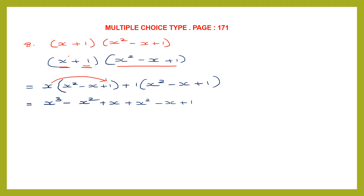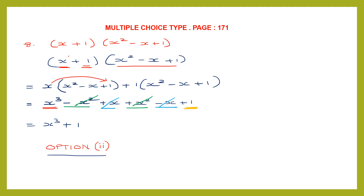Now we collect all the like terms. There is only one x cubed, so we write x cubed. For x squared: minus x squared plus x squared — they cancel. For x: plus x minus x — that also cancels. What is left is 1, so we write x cubed plus 1. This is our answer, and that is option 2.